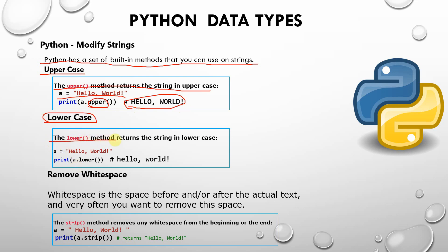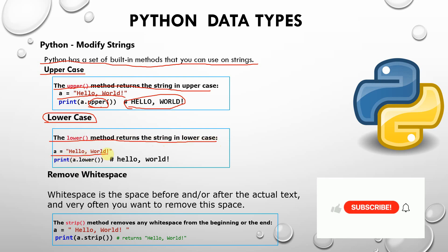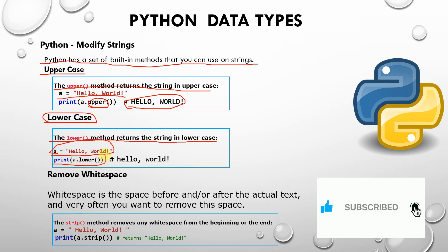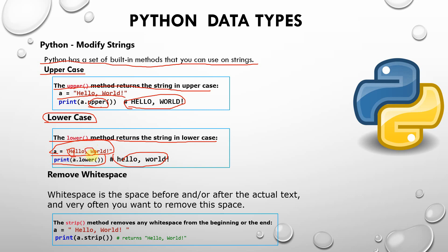The lower method returns the string in lowercase. For example, a is equal to 'Hello World'. When you print a.lower(), the whole string is converted into lowercase small letters. You can find that the capital letters H and W are converted — hello world like that. Let me execute these things.